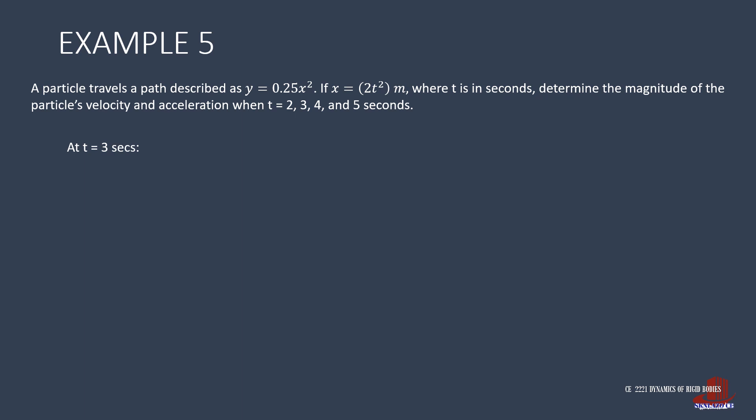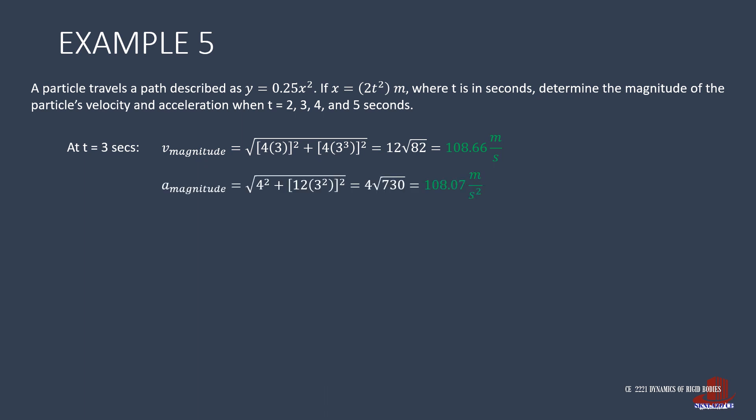The same process is used for the rest. At t equal to 3 seconds, the velocity is taken as the root of (4×3)² plus (4×3³)², which is 12 root of 82, or 108.66 meters per second. Acceleration is the root of 4² plus (12×3²)², simplified as 4 root of 730, or 108.07 meters per second squared.